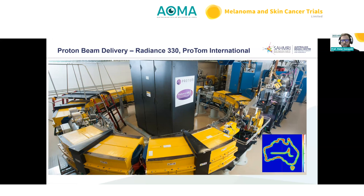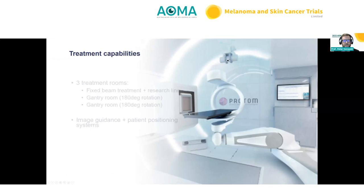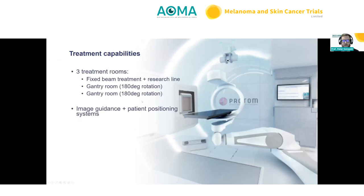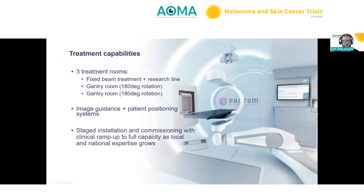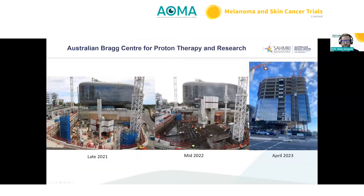The synchrotron is currently housed in the United States, having done its first run a couple of years ago. At the Bragg Centre, there will be three treatment rooms: a fixed beam treatment room with a clinical and a dedicated research beam line, and two gantries, with unique image guidance and patient positioning systems. Installation is staged, with commissioning and clinical ramp-up to full capacity as local and national expertise grows.